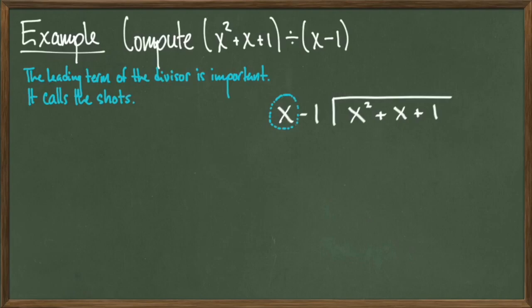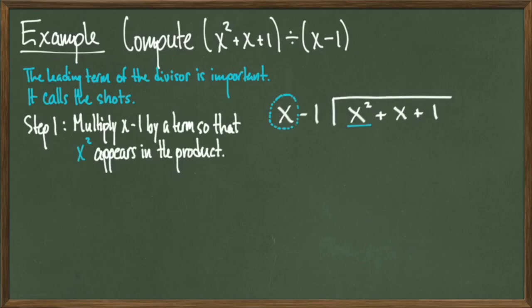Think of it like this. The leading term in the divisor that's written on the outside is what's going to help us find the terms on the inside. So x squared is going to be our first target. So the question is, what can I multiply x minus 1 by so that an x squared shows up? Notice that if I multiply the quantity by x itself, the product is x squared minus x.